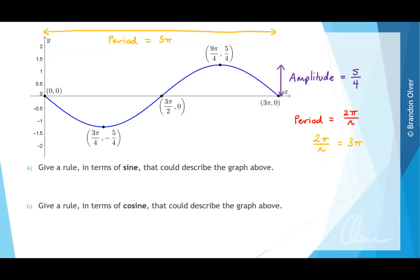So when we rearrange that, we find that n is equal to 2 pi divided by 3 pi, which is just equal to 2 divided by 3. So this is going to be the value that we multiply x by in our rule.